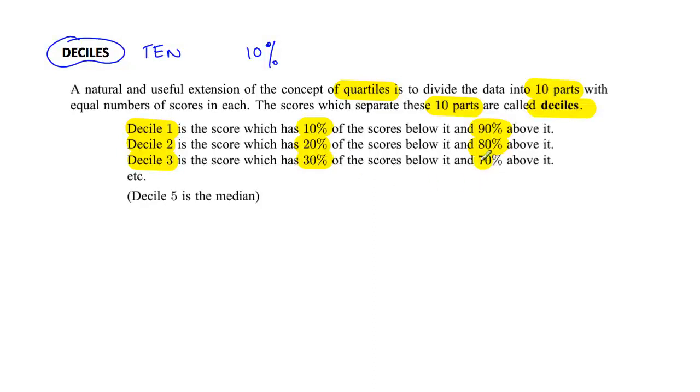Decile 3, 30% below and 70% above. So what you're finding is 10 scores that basically tell you where the proportions of marks are. Notice the decile 5 must be the median because that separates it into 50% below and 50% above.